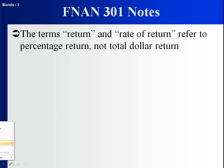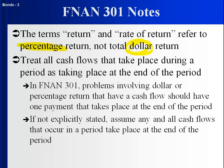A couple of notes: we've talked about dollar return and percentage return. If a problem just says 'return' or 'rate of return,' it means percentage return — that's what we deal with throughout this course. We only deal with total dollar return when it's specifically called 'dollar return.' Also, all cash flows that take place during a period will be treated as taking place at the end of the period, which allows for discounting to be consistent.